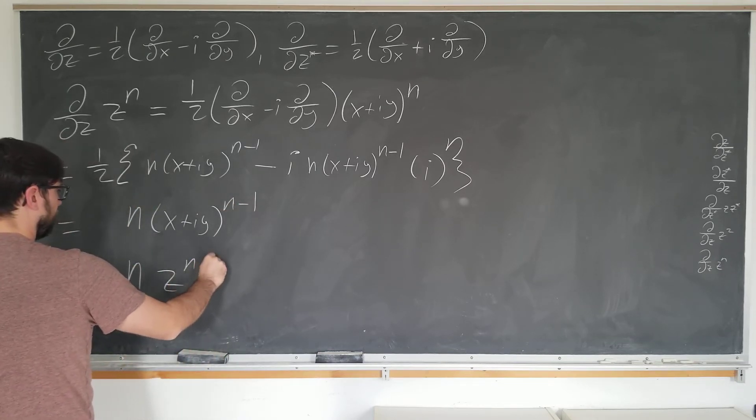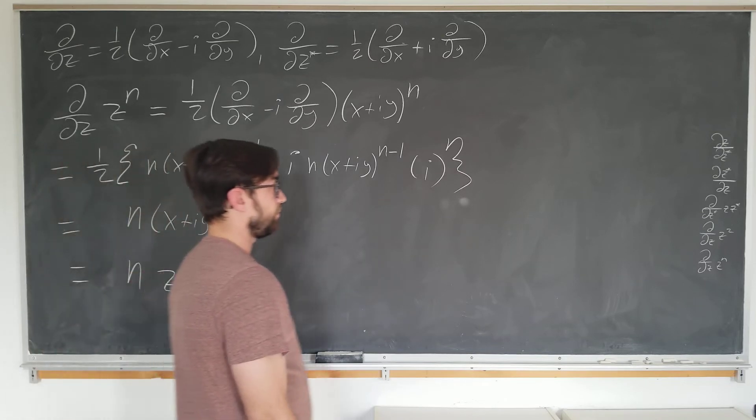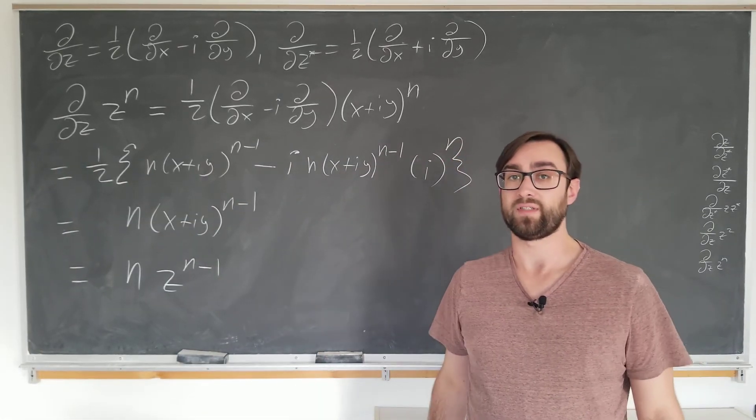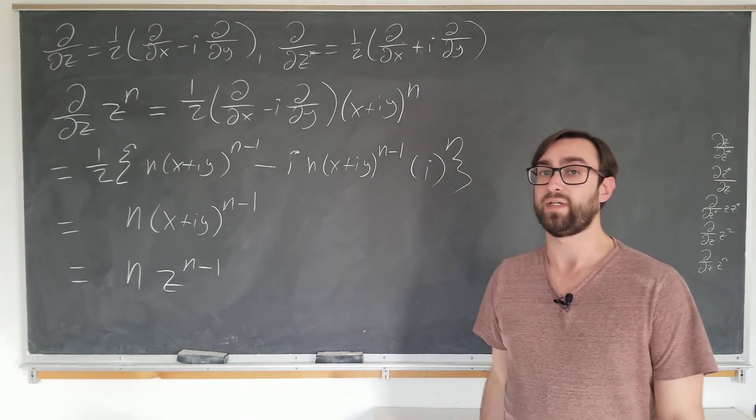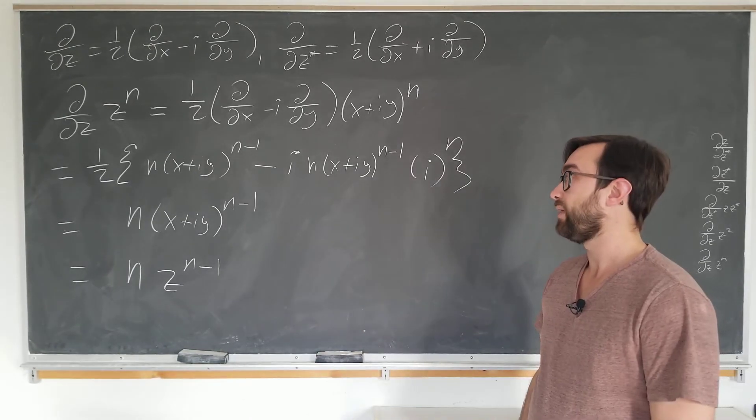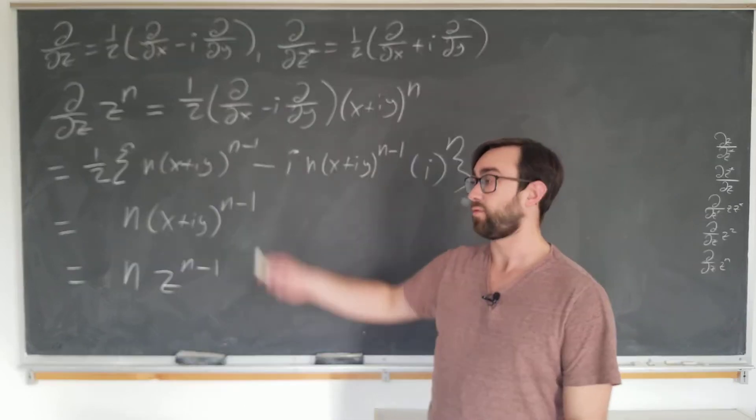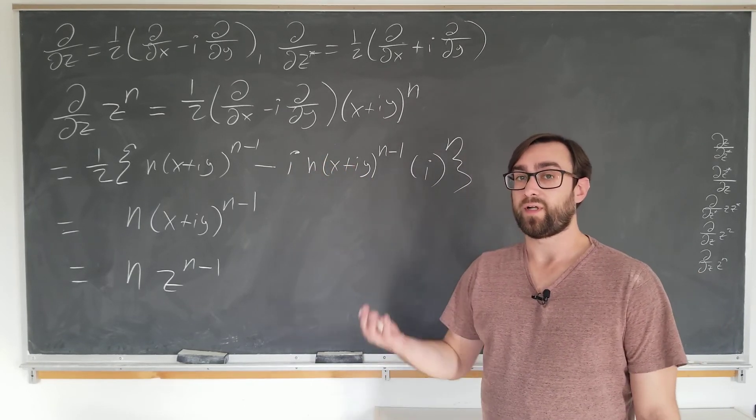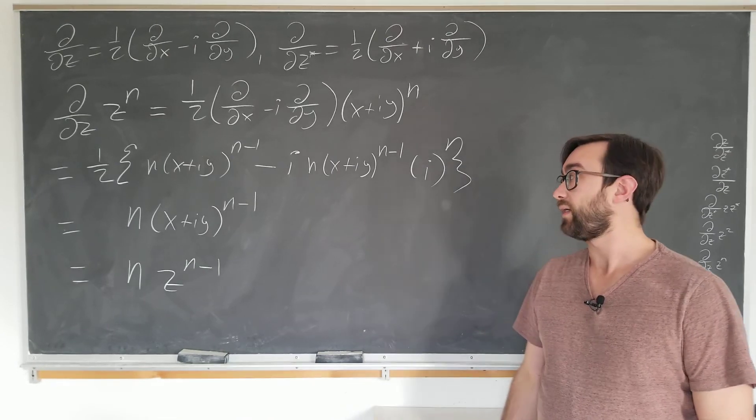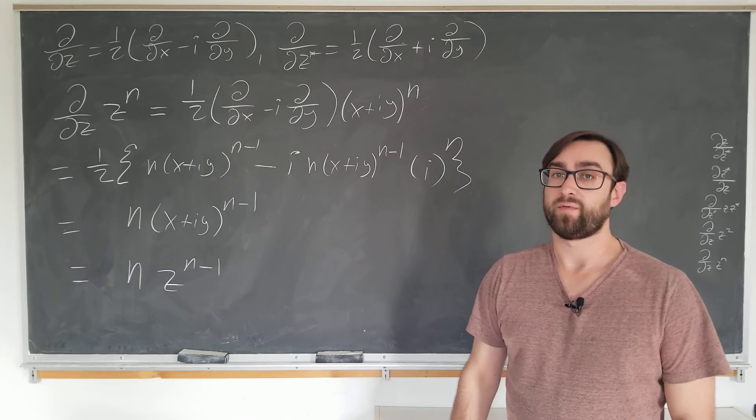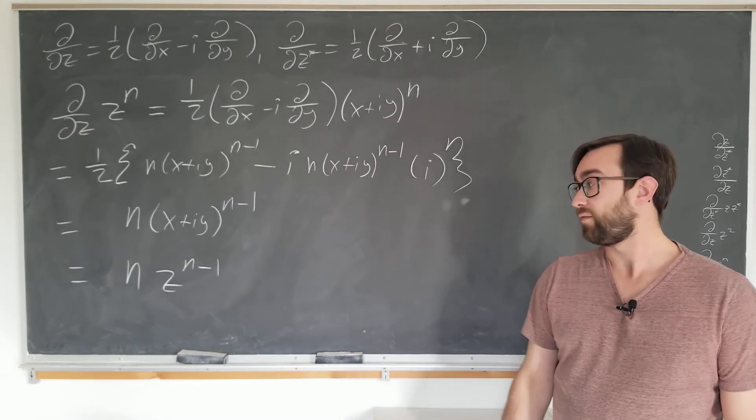which we can of course recognize as n z to the n minus one. And this is a proof of the power rule for the Wirtinger derivatives. It may seem like cheating because I didn't use the binomial theorem, but I would argue that we already know the chain rule works for the real differential operators. I see no reason why I can't apply them to complex combinations of the real differential operators, at least from an applied math point of view.